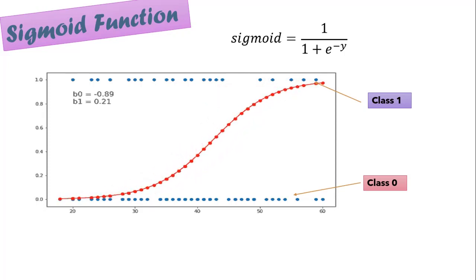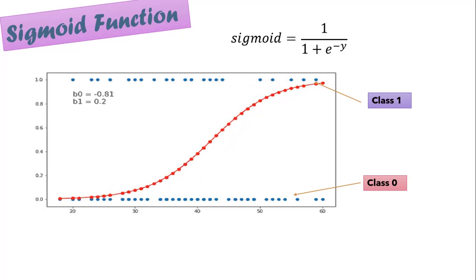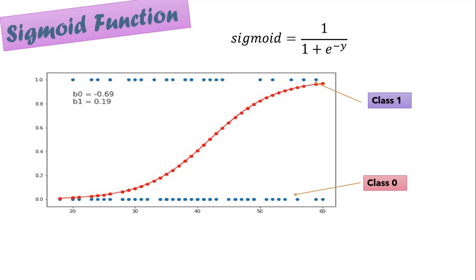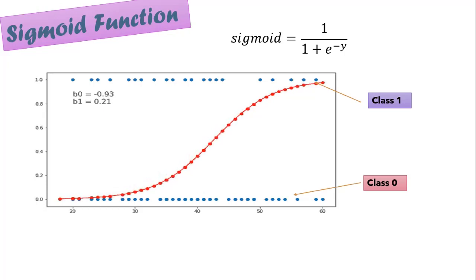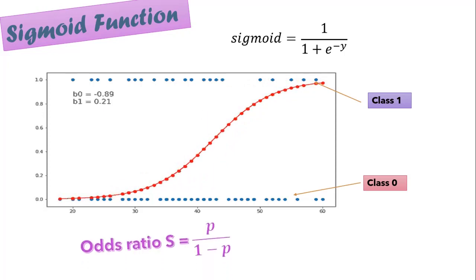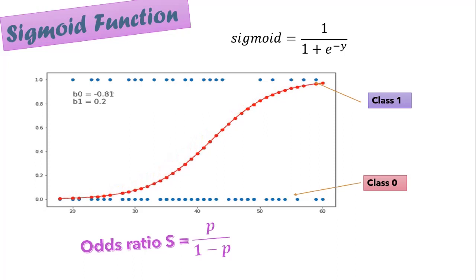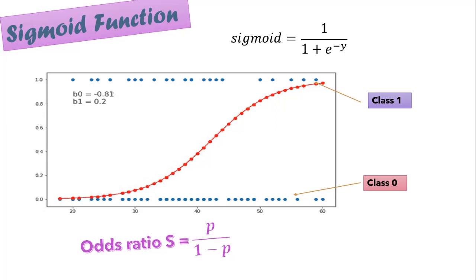However, this is not a fixed threshold. It varies based on the business problem, and what threshold value should be used can be decided with the help of AIC and ROC curves, which we will see in upcoming sessions. The odds ratio is obtained by the probability of an event occurring divided by the probability that it will not occur, and taking the log of the odds ratio gives the log of odds.